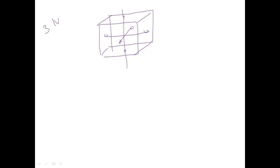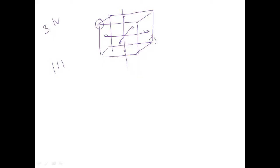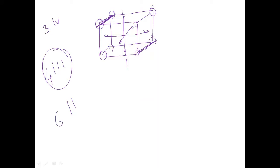For the threefold axis, you hold the cube along its solid angles. A cube has 12 solid angles; dividing by 3 gives 4 threefold axes. For the twofold axis, you hold it along the edges. With 12 edges divided by 2, we get six twofold axes of symmetry. In total we have 13 axes of symmetry.